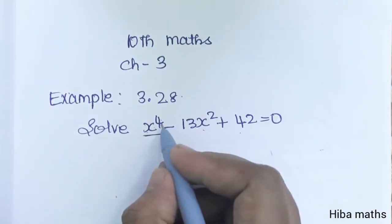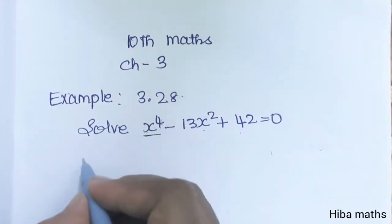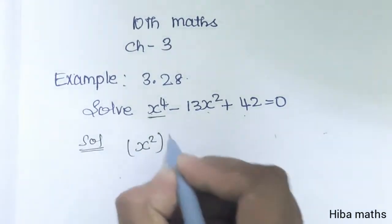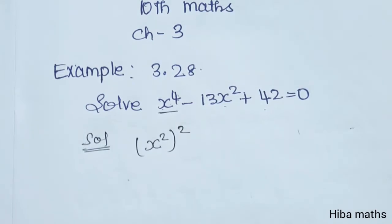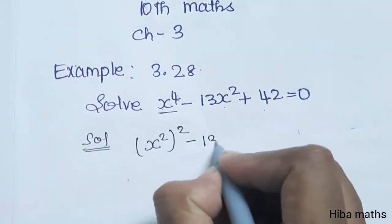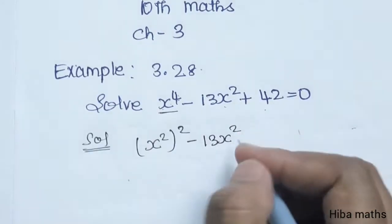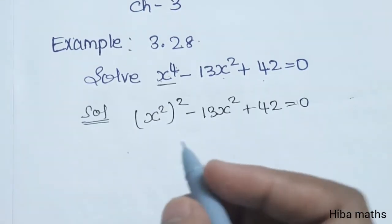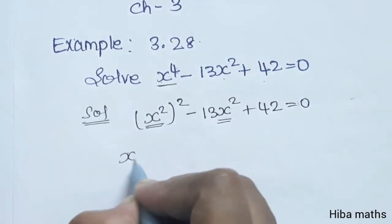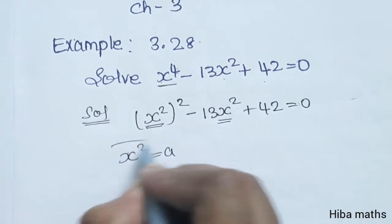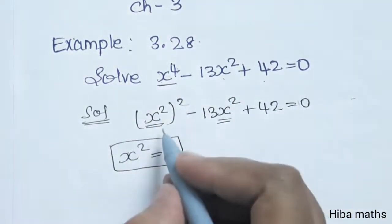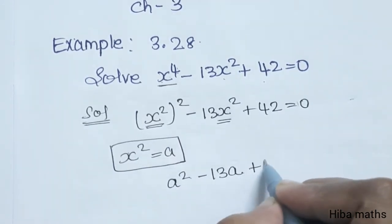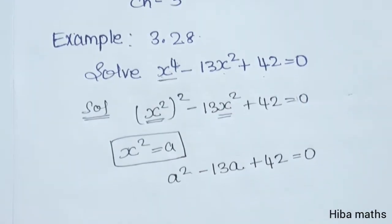Where do you get x power 4? x power 4. In this equation we change x power 2 whole square — x square whole square — minus 13 x square plus 42 equal to 0. Where do you get x square? I will consider x square as a. So we get: a square minus 13a plus 42 equal to 0.